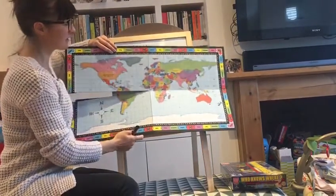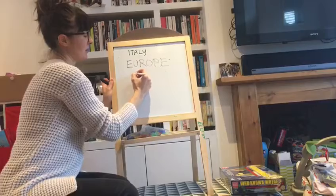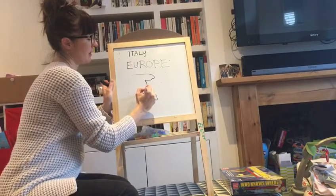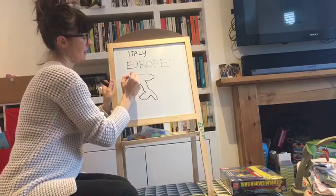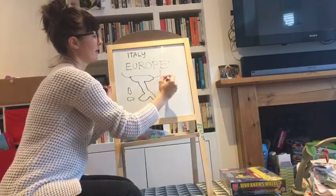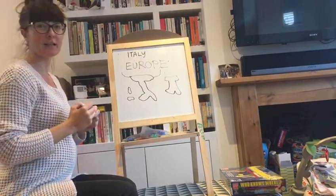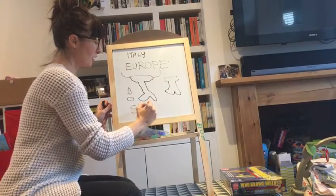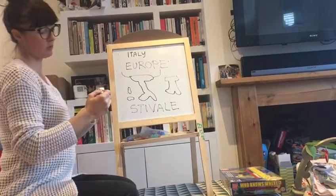And actually this funny shape gives another name to Italy. Let's kind of draw it a bit like that. Who knows the other name? Here you've got Sicily, Sardinia, and here you've got the other countries. So does it look like the shape of a boot? And actually the Italians call Italy 'stivale', which means boot. So here you go, a first word for you: stivale, which means boot.